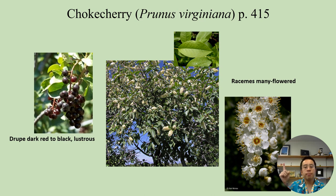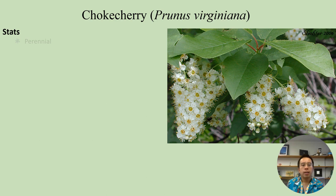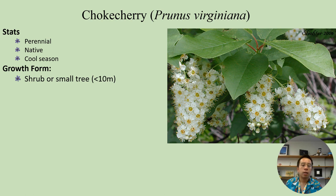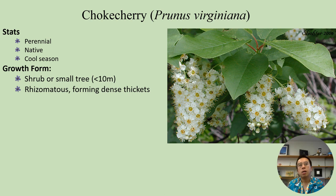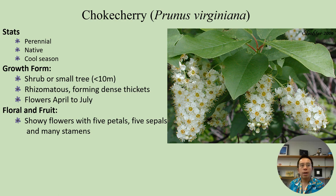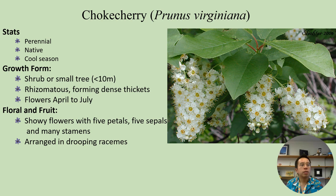Prunus virginiana is a perennial native and cool-season plant. It grows as a shrub or small tree, usually less than ten meters tall, and can be rhizomatous, forming dense, thick thickets. It typically flowers between April and July. The flowers are very showy, with five petals, five sepals, and many stamens — characteristic of the Rosaceae family — and are often arranged in drooping racemes. The berries are dark red to black and often lustrous.